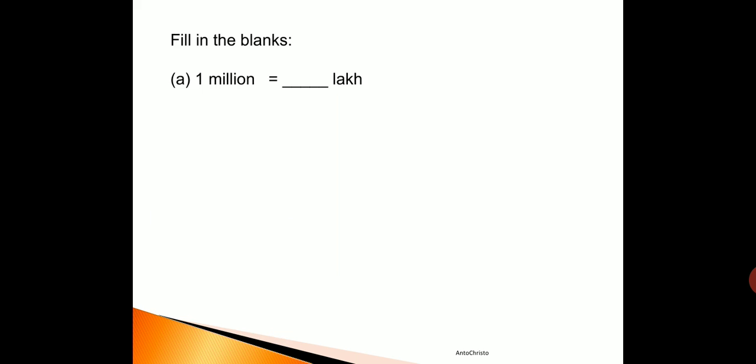Look at this — a fill-in-the-blanks question is given: one million is equal to dash lakh. I hope you all remember the Indian system of conversion which I taught you earlier. Anyway, let us recall with the international system. For this purpose, I am first writing the numbers in numeral form. It is given one million equals dash lakh in words, so this will be converted to numbers. I am writing one million equals dash one lakh — it is not mentioned how many lakhs, so I am simply taking it as one lakh.